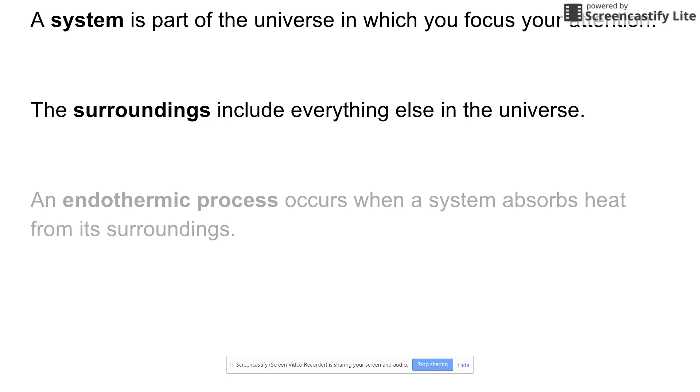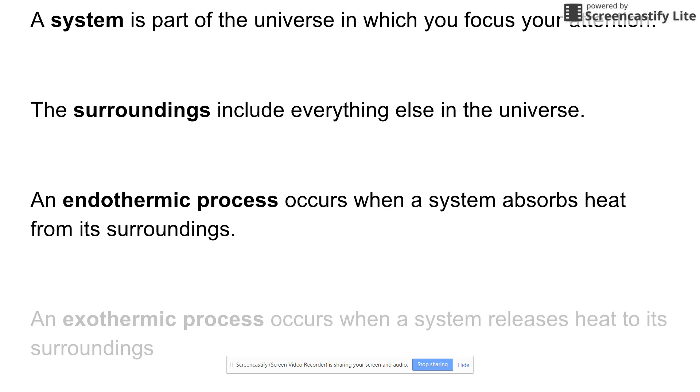So the first definition is endothermic process, and that's a process which occurs when a system absorbs heat from the surroundings. And exothermic is exactly the opposite. It's when a system releases heat to its surroundings. So let's go through a few examples.